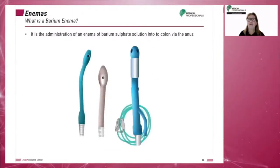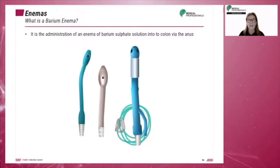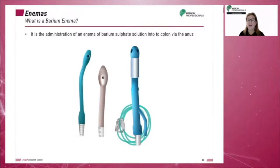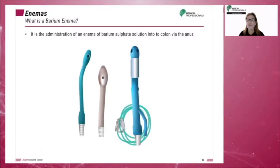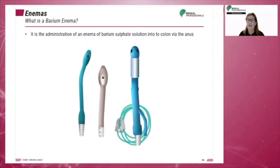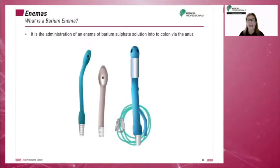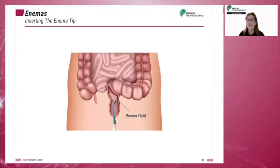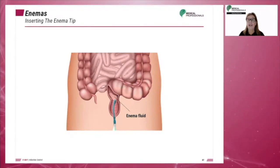The barium enema involves the administration of an enema of barium sulfate solution into the colon via the anus. The study is used to help diagnose pathologic conditions of the colon or lower gastrointestinal tract. The barium enema catheter may have a plain tip or an inflatable cuff attached. After the tip is inserted, the cuff is inflated to hold the catheter in place and to prevent involuntary expulsion of barium. The technologist may be required to insert the barium enema tip under medical aseptic conditions.